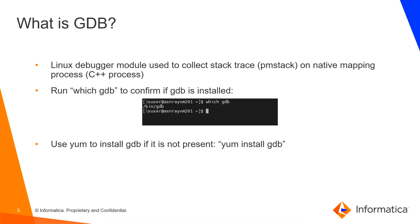GDB is a Linux debugger module that is used to collect stack traces on a native mapping process. If you are troubleshooting an issue with mapping performance or a hanging job, you should ensure GDB is installed before running Infodump. Further use of GDB is outside the scope of this video, but we recommend installing it if it is not already on the server.